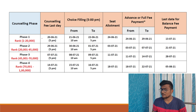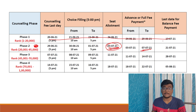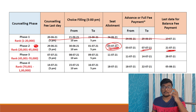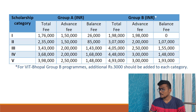Coming to VAIT Phase 2 details: you are currently at the seat allotment stage. From today until the 7th, you must pay the advance fee. After paying the advance fee, a balance remains, which you must pay before the 21st. So advance fee is due before July 7th and balance fee is due before July 21st.